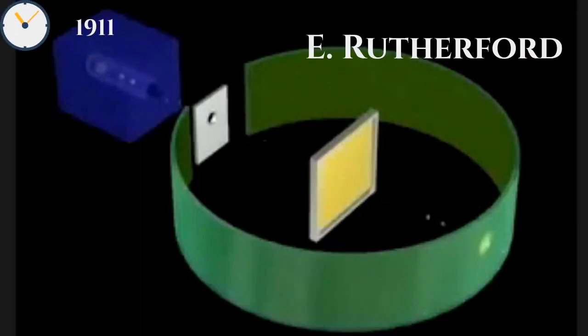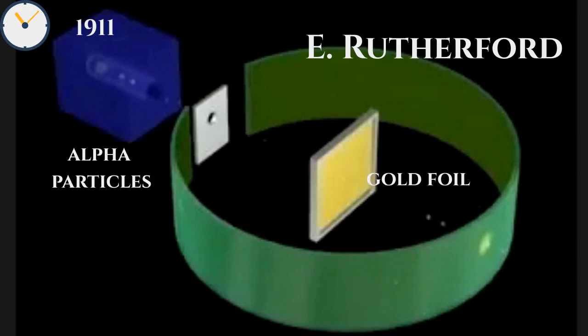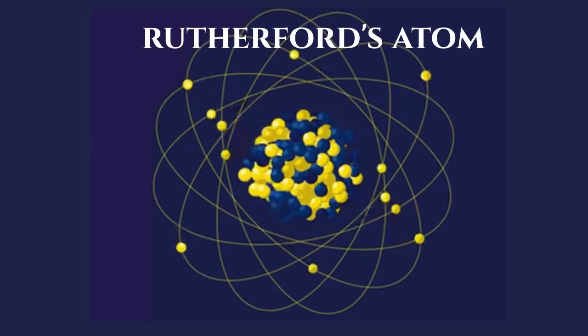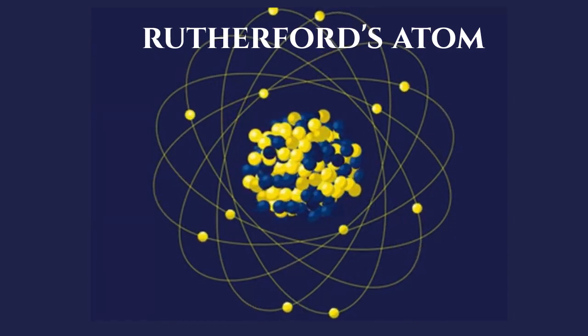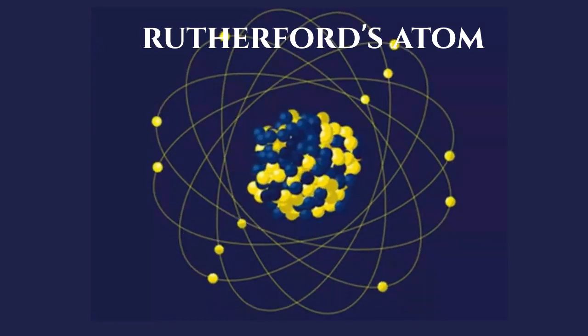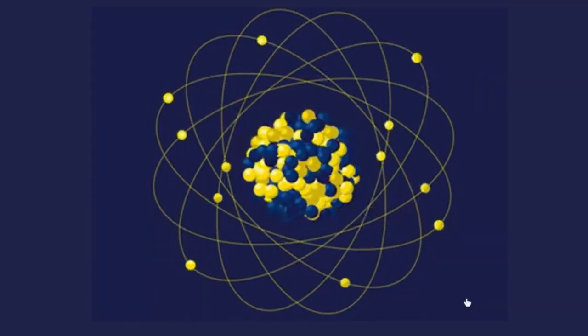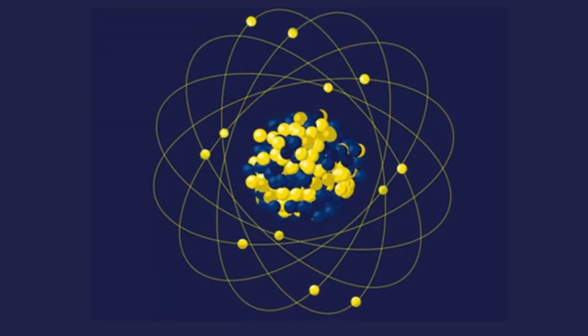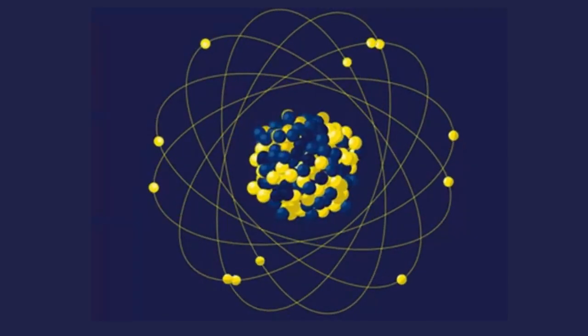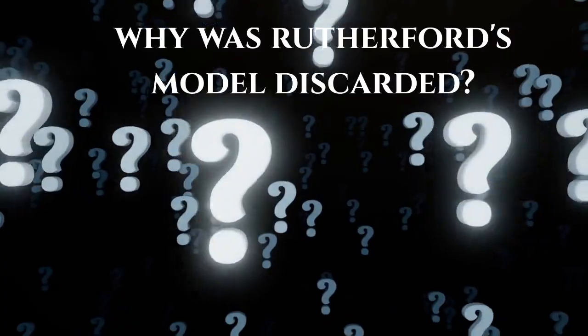In 1911, Rutherford bombarded alpha particles onto a thin gold foil. He observed that most alpha particles passed straight through the foil, few were deflected by some angles, and one in 20,000 particles rebounded. He concluded that most of the atom is void, with a positively charged center — the nucleus — and negatively charged electrons surrounding it. However, Rutherford's model didn't stay for long. Based on the history we've covered, can you guess why?